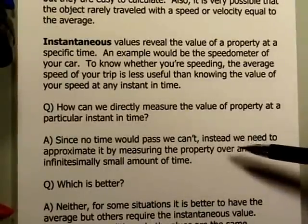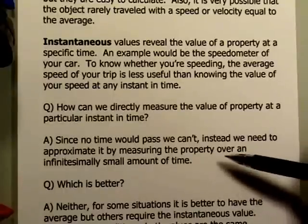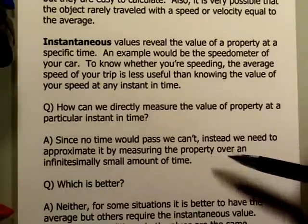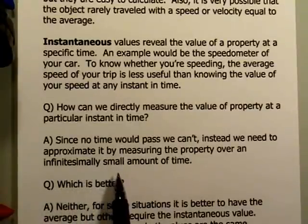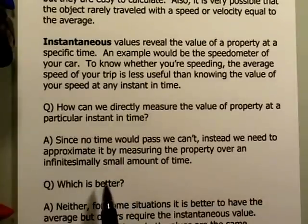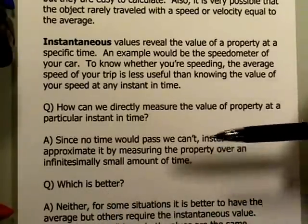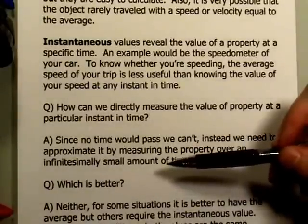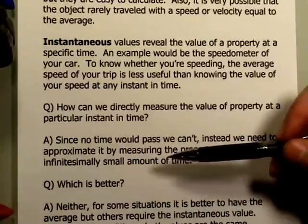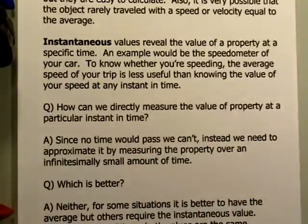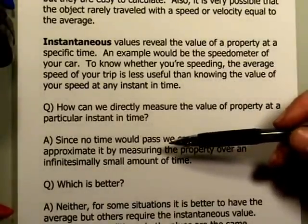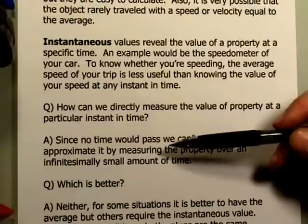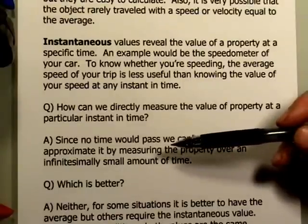What we do instead is approximate it — and that's exactly what your speedometer does. Your speedometer measures the distance you've traveled over a very small amount of time. This is where the idea of an infinitesimally small amount of time comes in. If I want a more accurate measurement of my instantaneous speed, I need to take a very, very small time interval, figure out the distance, and divide the two. Your car essentially takes a tenth or a hundredth of a second, measures the distance traveled, and divides by that time. And that's pretty good.